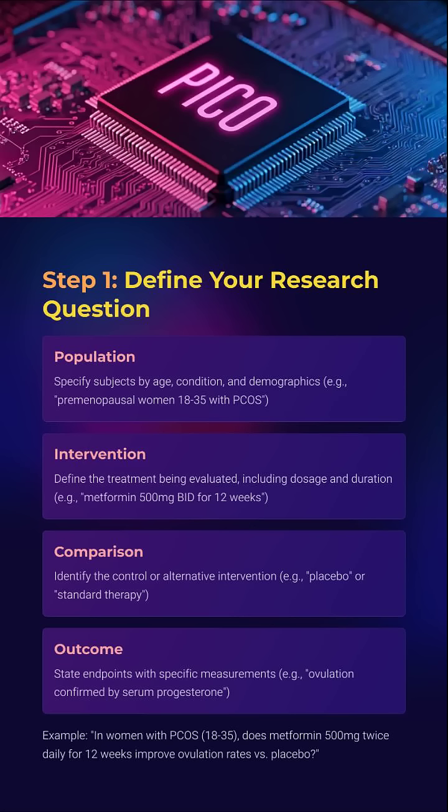Start with a razor-sharp question using PICO: Who's your population? What's the intervention? What's the comparison? What are the outcomes? Example: In women with PCOS aged 18 to 35, does metformin improve ovulation better than placebo?